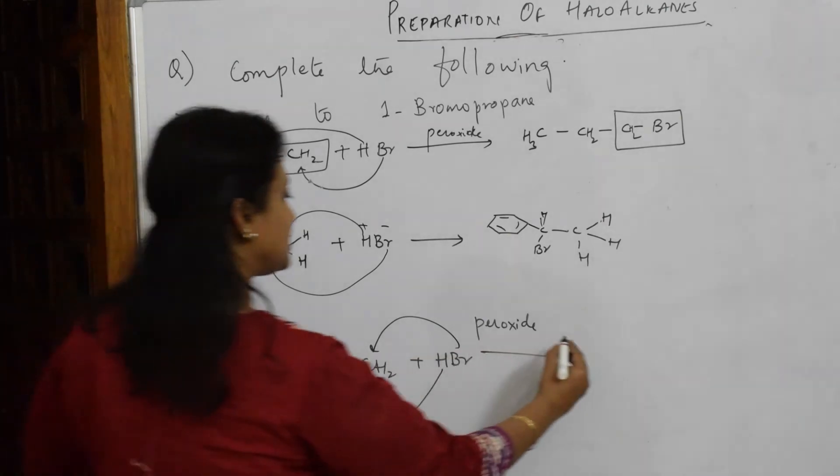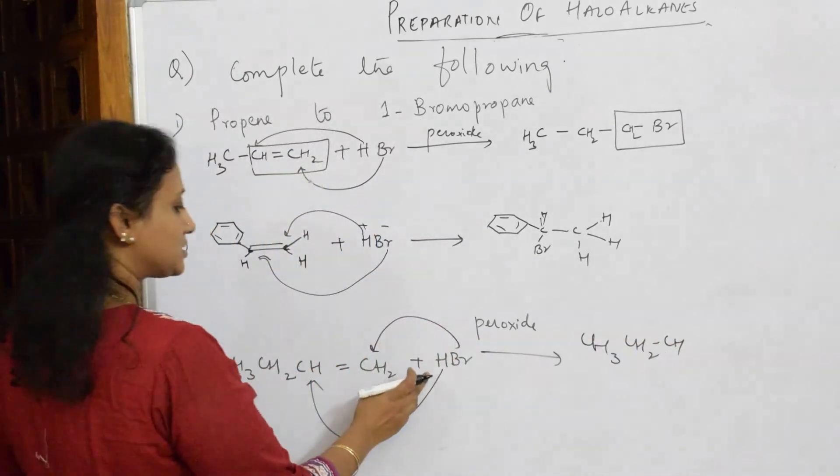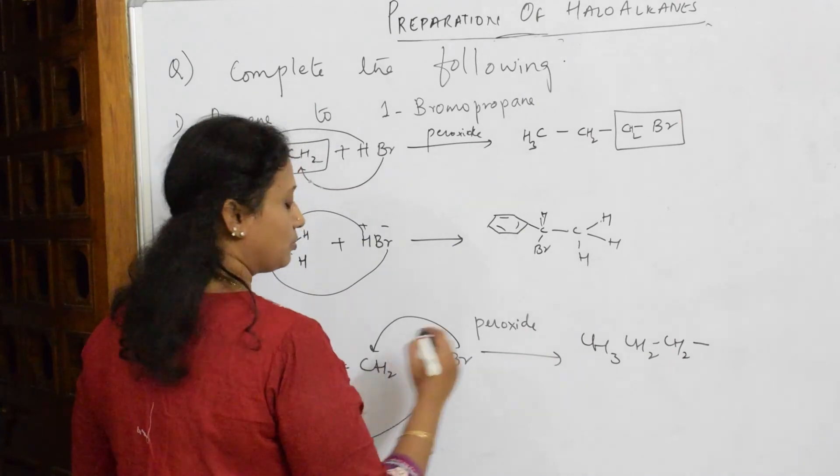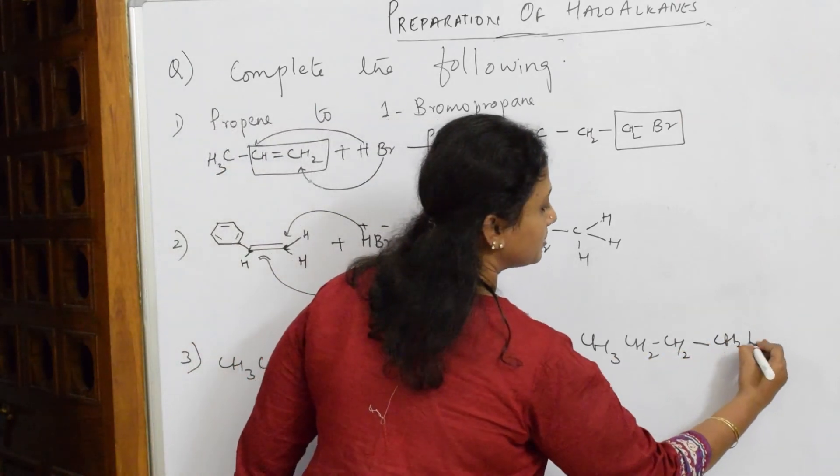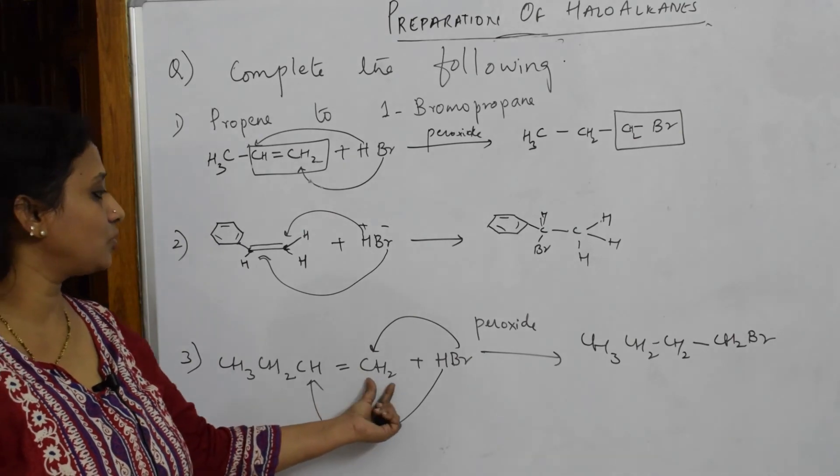So let me write CH3, CH2, CH. So what happened to this? H - it has added to this single bond - CH2Br. So negative part adds to the carbon having more number of hydrogens.